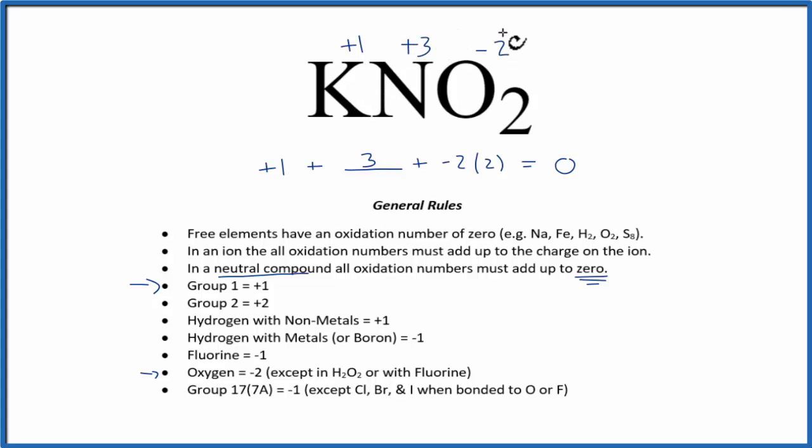And all these numbers here, they'll add up to zero because this is a neutral compound. To recap, we found the oxidation numbers for the elements we knew, the K and the O2,